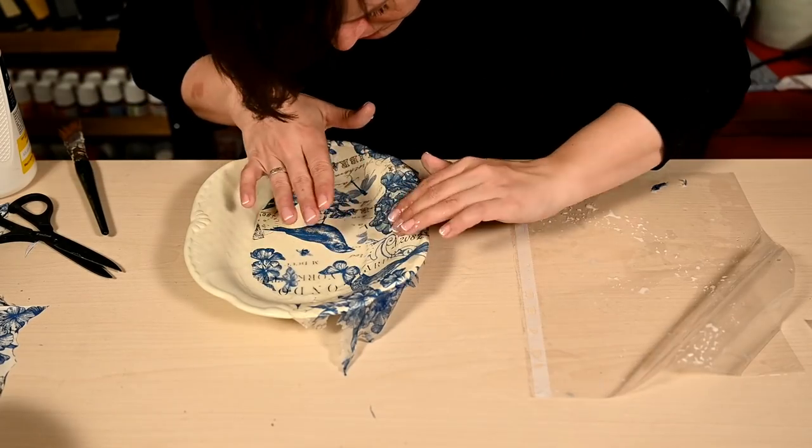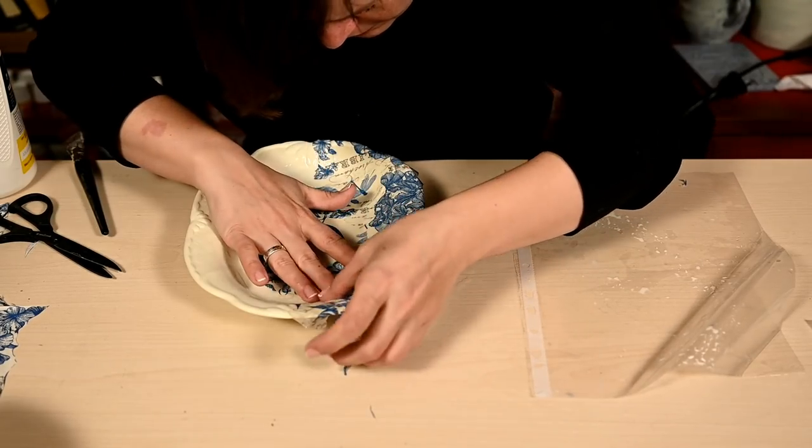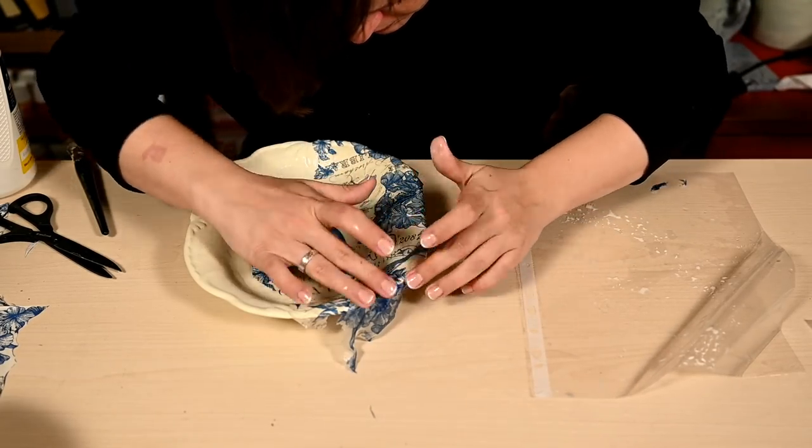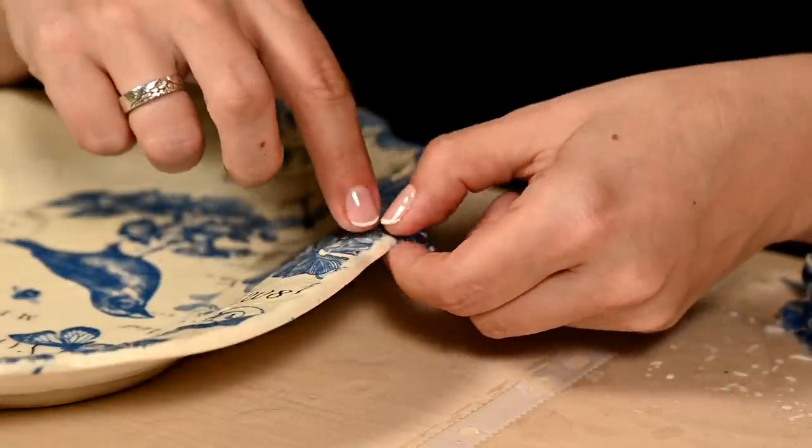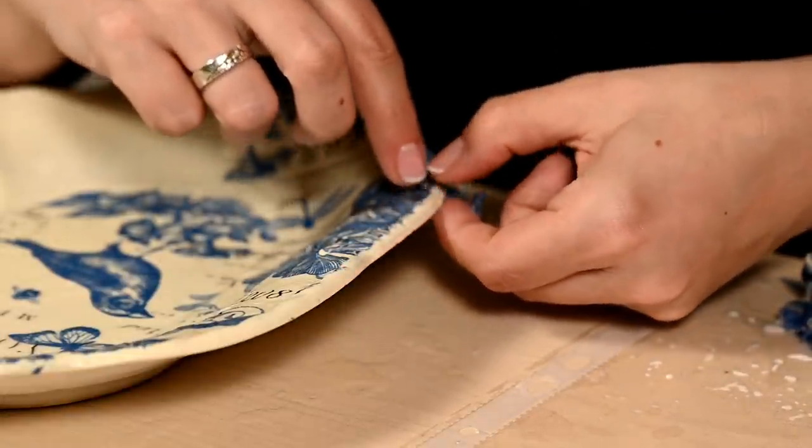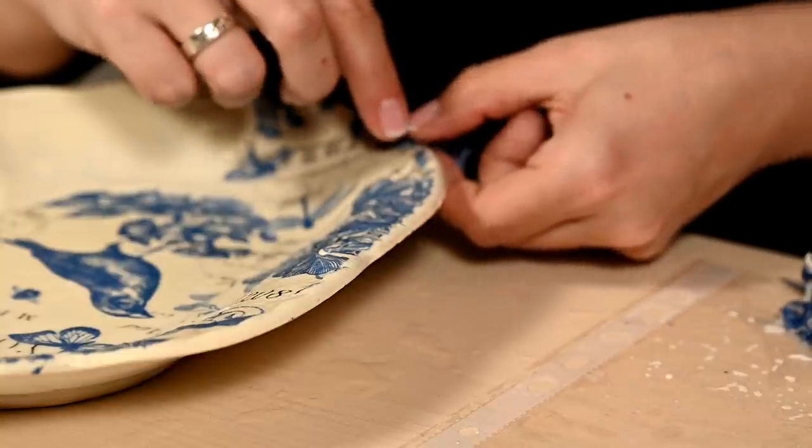I'm carefully smoothing out the few creases that appeared with wet fingers, and while the napkin is still wet I'm tearing off the excess napkin to get a nice and smooth edge.